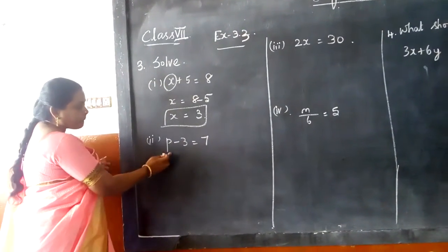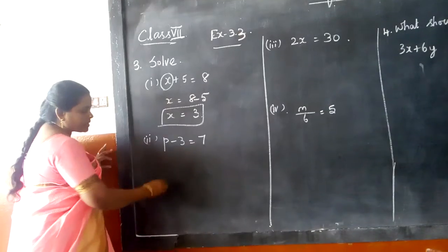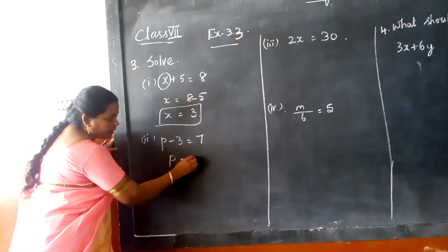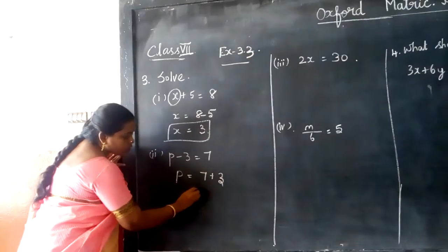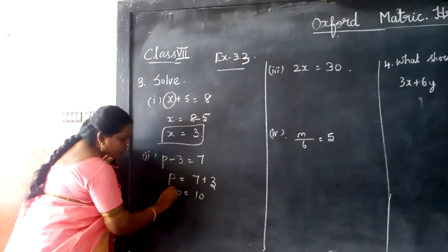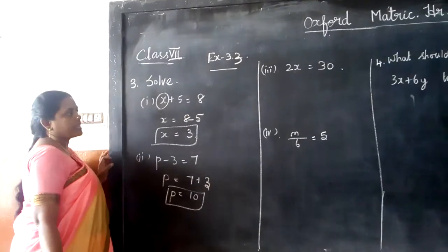Now the second question is p minus 3 equals 7. So keep p on this side, take this minus 3 to that side, so it will become plus 3. So 7 plus 3 equals 10. So the value of p is equal to 10.